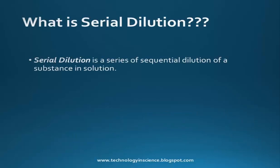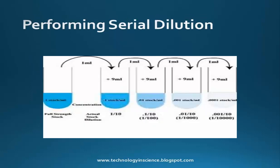What is serial dilution? Serial dilution is a series of sequential dilutions of a substance in a solution. To perform a serial dilution, mix the stock solution with a diluent. As shown in this image, 1 ml of the solution is transferred to 9 ml of diluent, which gives a 10-fold dilution. This process is repeated serially, which is why it is called serial dilution.